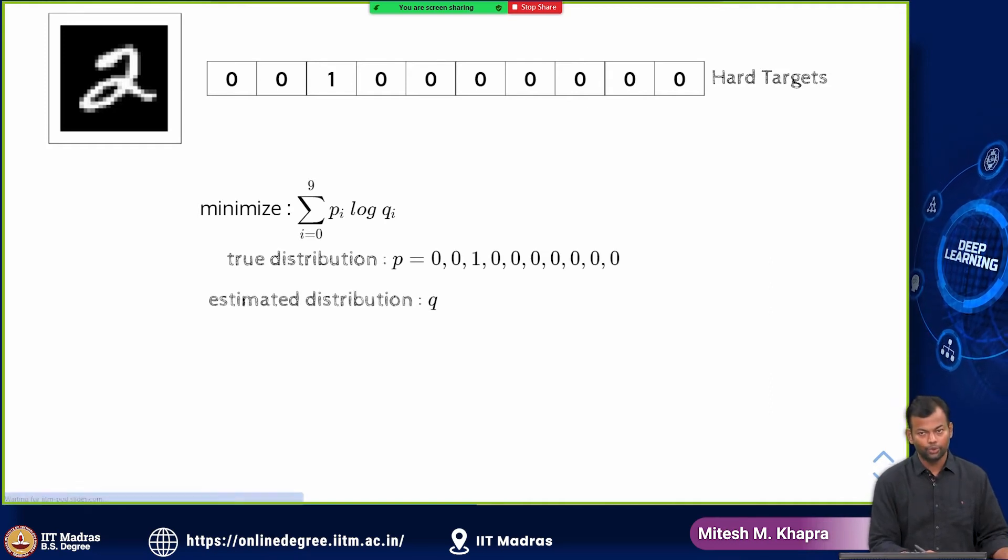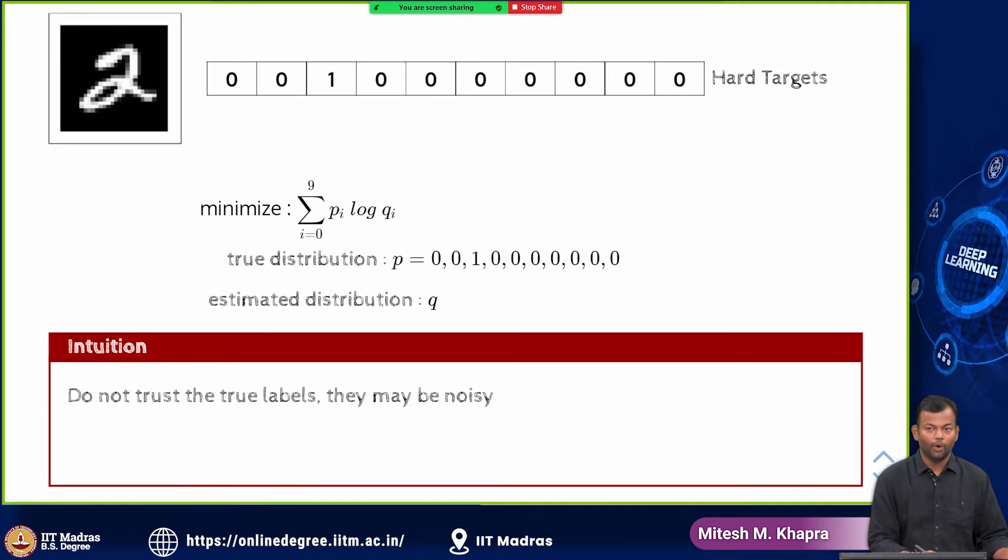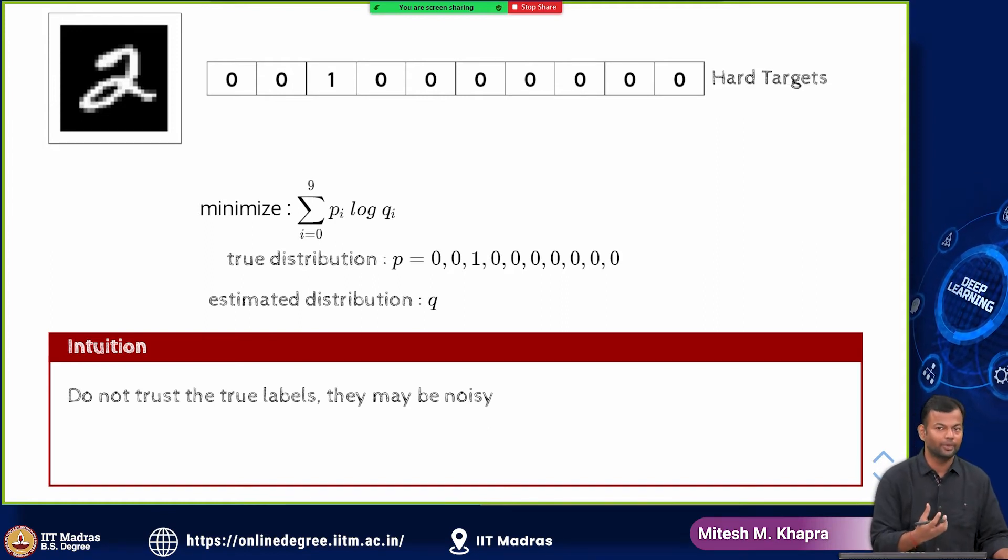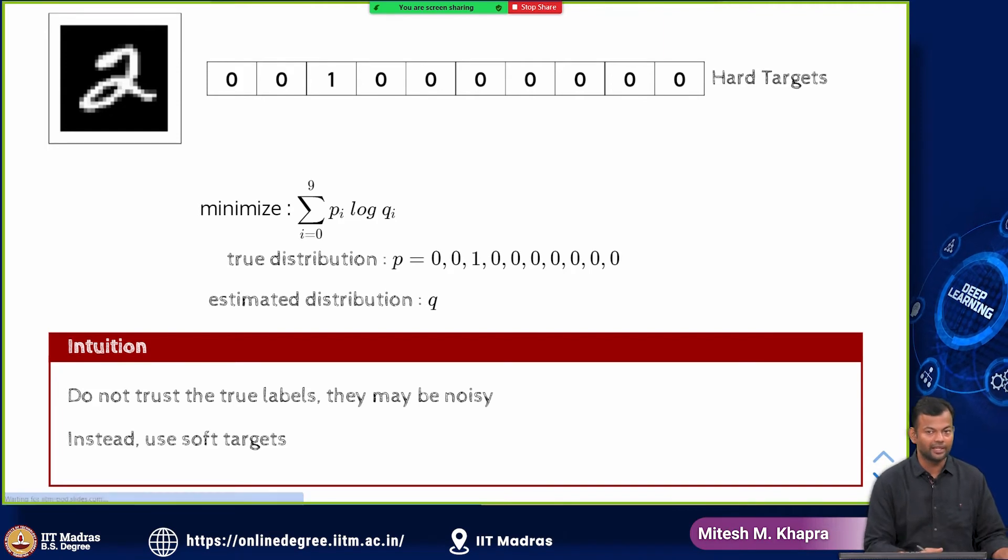Instead of using the true distribution, what if I say that I do not trust the true labels, they may be noisy or I do not want to trust the true labels because then I am trying to map my input exactly to the output and that is what overfitting is. So instead I am going to add some noise to the outputs.